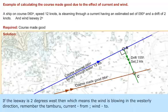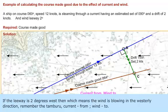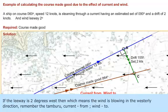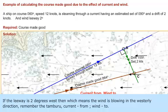If the leeway is 2 degrees west, then it means the wind is blowing in a westerly direction. Remember the thumb rule: current from, wind to.